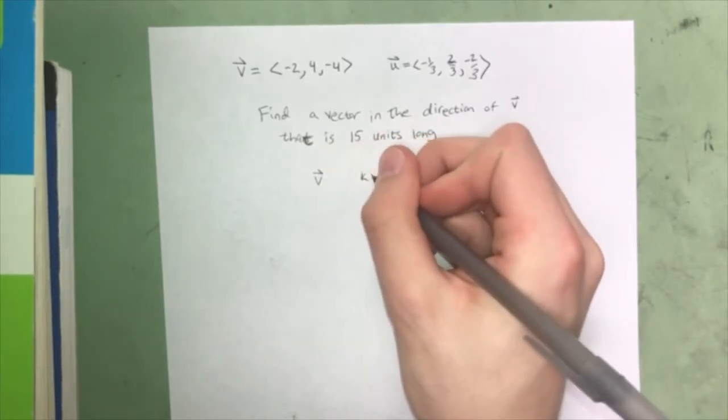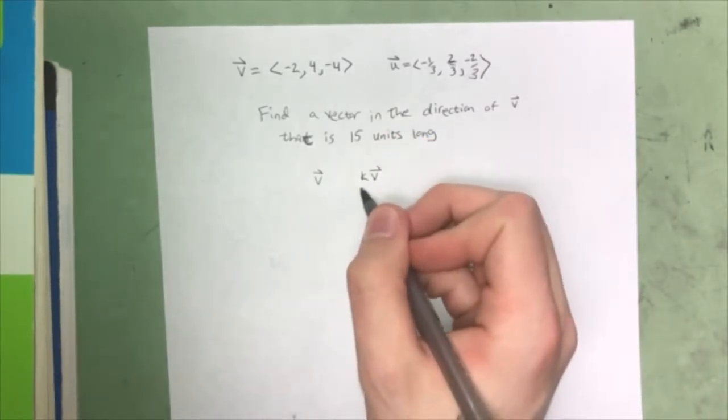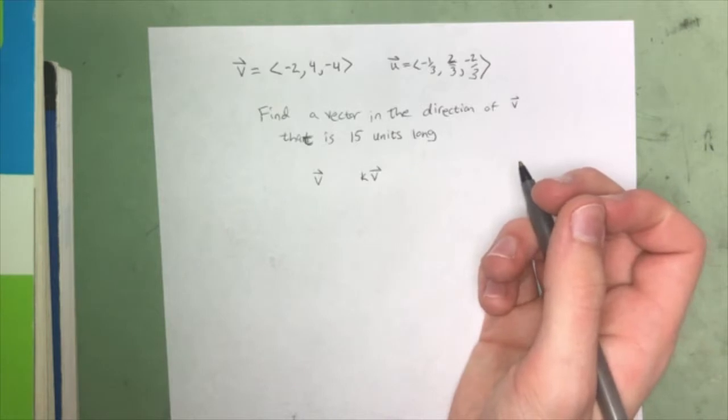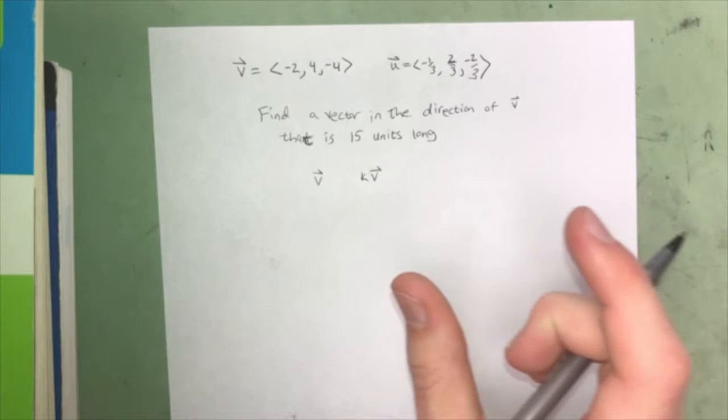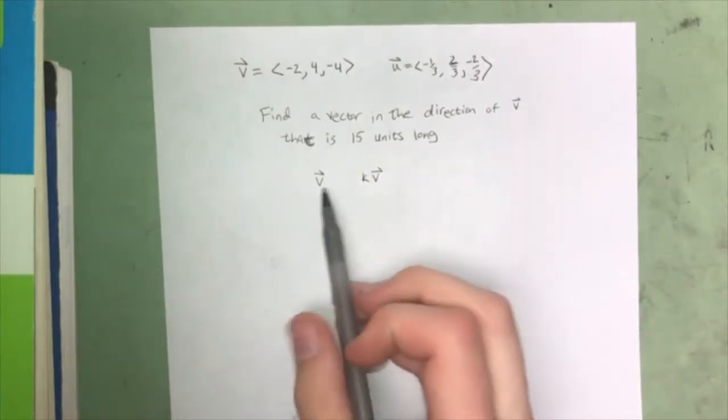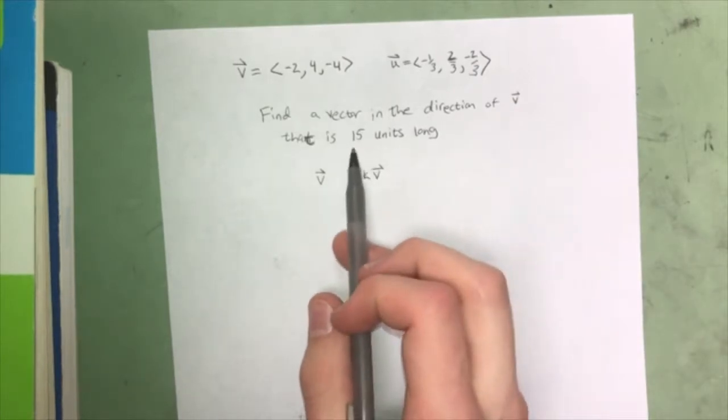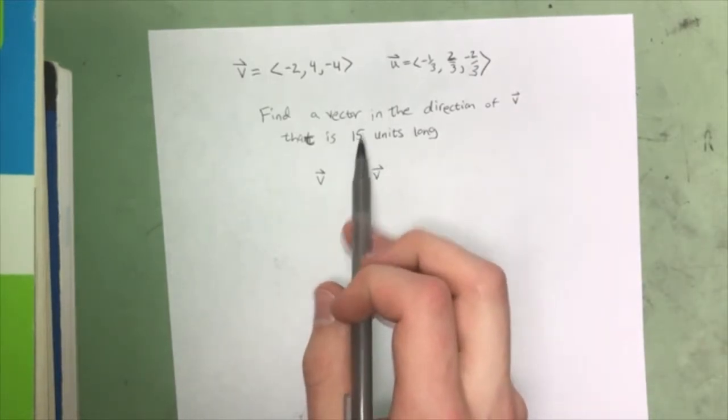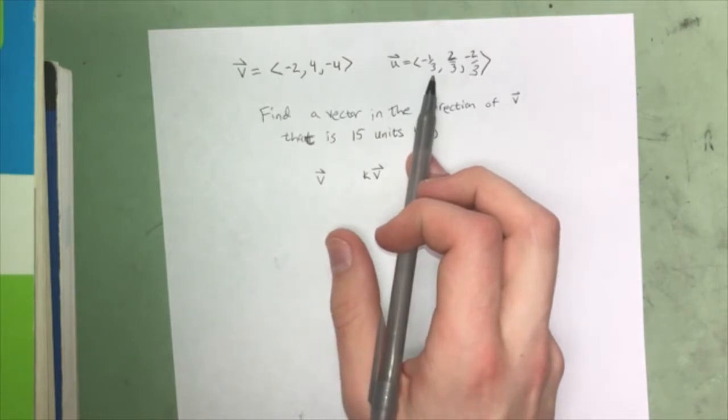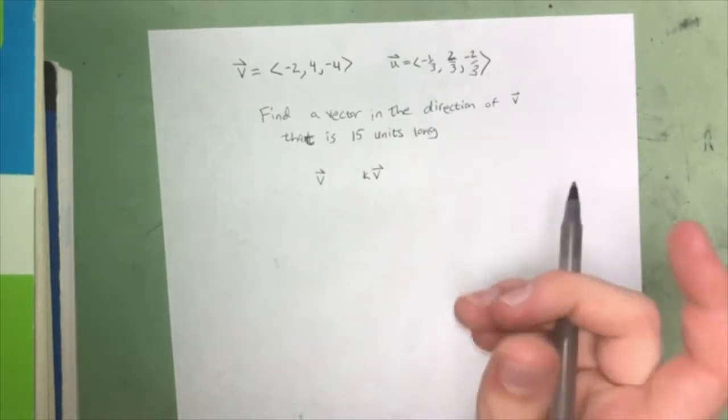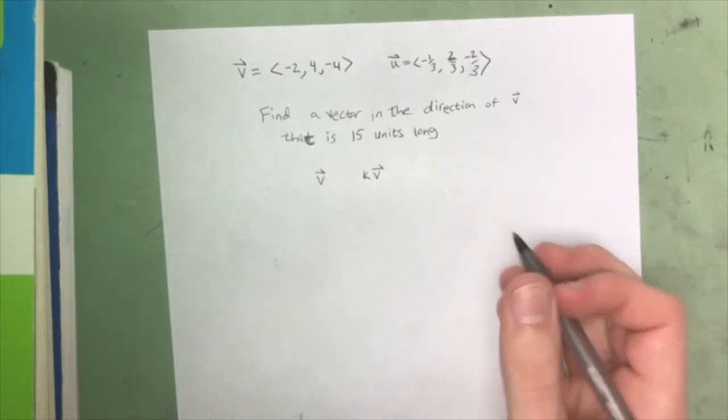When you have a vector and then you have some scalar times a vector, both of these are going to be in the same direction. So the only difference will be that this vector has a magnitude that's k times larger than this vector. And what that tells us then is that we can just take 15 and multiply it by the unit vector to find our new vector that is in the same direction as v and 15 units long.